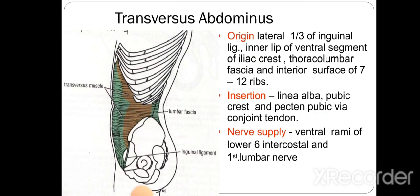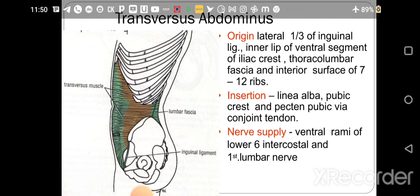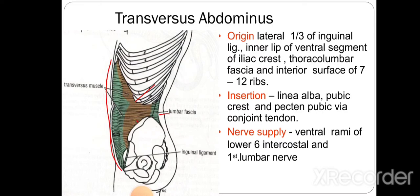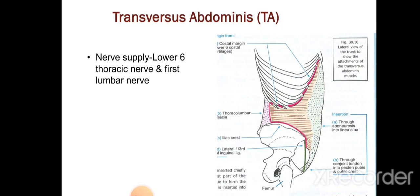The transversus abdominis muscle, as the name indicates, has fibers running horizontally. Its origin is from the lateral one-third of the inguinal ligament, the inner lip of the ventral segment of the iliac crest, the thoracolumbar fascia, and the inferior inner surface of ribs 7 to 12. The insertion is on the linea alba, the pecten pubis, and the pubic crest. Nerve supply is by the ventral ramus of the lower six intercostal nerves and the first lumbar nerve.